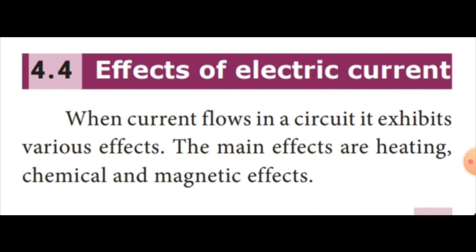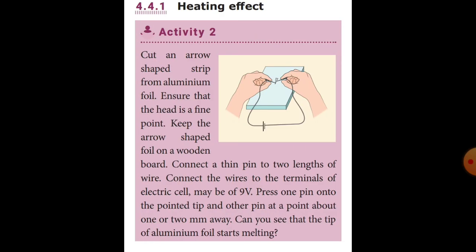When a current flows in a circuit, it exhibits various effects. The main effects are heating effects, chemical effects, and magnetic effects. The first one is the heating effect. In an aluminum foil experiment, the aluminum foil melts. This is the heating effect of electric current.